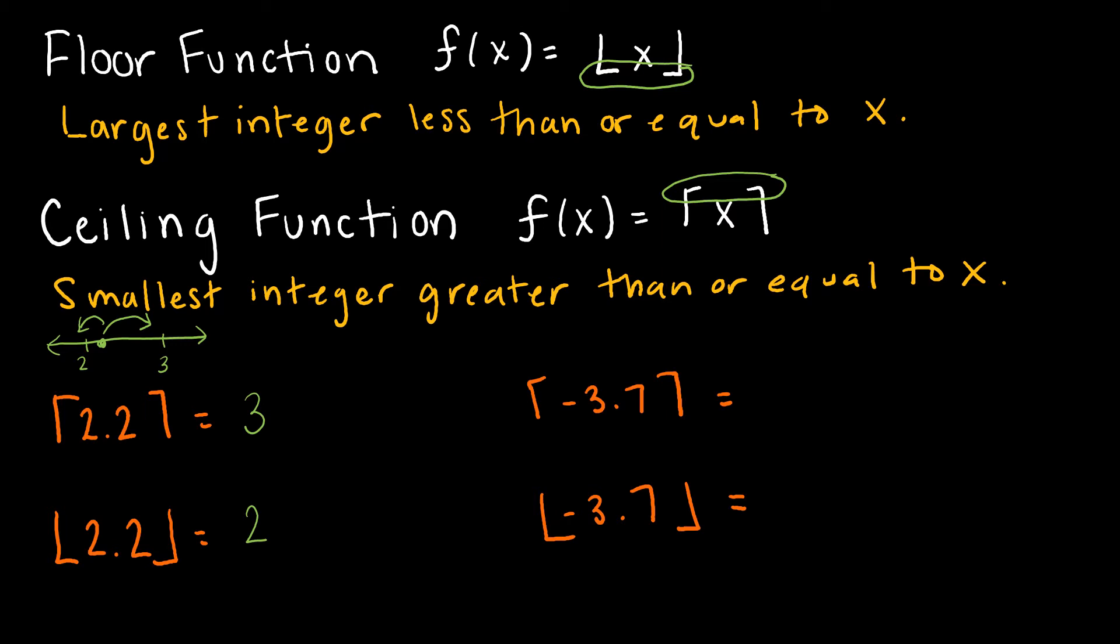Same thing happens for negative 3.7, but just be careful how you put these numbers on the number line. Remember, 0 is over here somewhere. This would be negative 3, this would be negative 4, and negative 3.7 is somewhere in here. If I'm rounding up for my ceiling function, I end up at negative 3. If I'm rounding down for my floor function, I end up at negative 4. So just be very careful with your negatives.